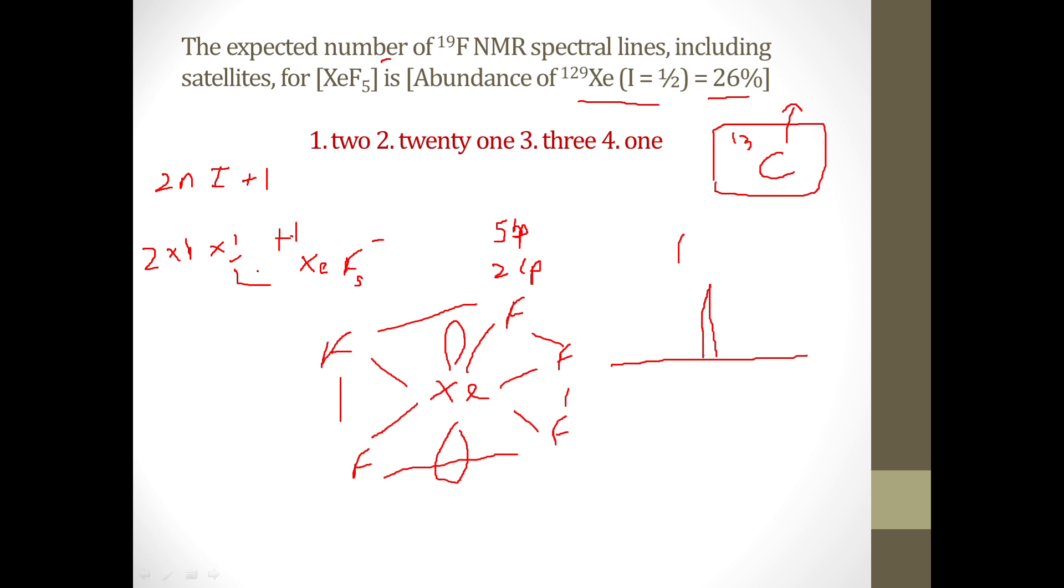So it will split this fluorine because of the coupling with xenon. It will split it into two peaks and we will observe two peaks like this, one over here and one over here. And this will be of low intensity because the abundance is only 26 percent.